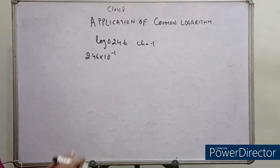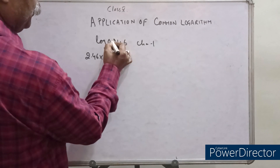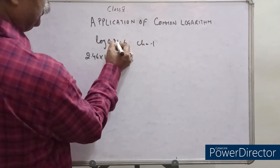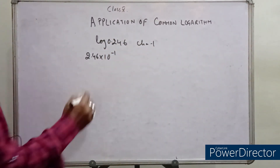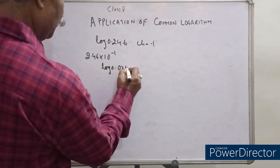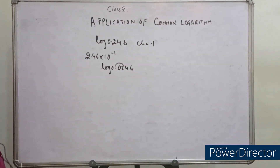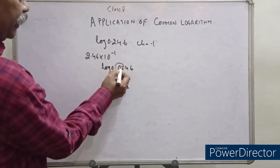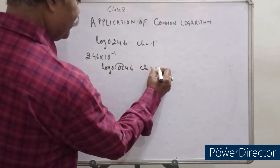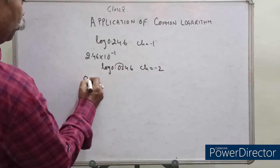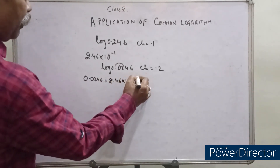In such cases, as a shortcut, we shift the decimal point to the first non-zero digit. When shifting in this direction to the first non-zero digit, we cross one digit, so it is minus 1. For log 0.0246, we shift the decimal to the first non-zero digit and cross two digits, so the characteristics is minus 2. In standard form, 0.0246 is 2.46 into 10 to the power of minus 2.